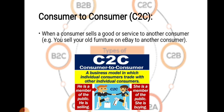The third type is Consumer to Consumer. Here we are talking about one consumer selling to another consumer. When a consumer sells goods or services to another consumer — for example, you sell your old furniture on eBay to another consumer — such E-Commerce transactions are called Consumer to Consumer or C2C. As shown in the picture, it is a business model in which an individual consumer trades with another individual customer. One is a seller and one is a buyer, and both are members of the general public.